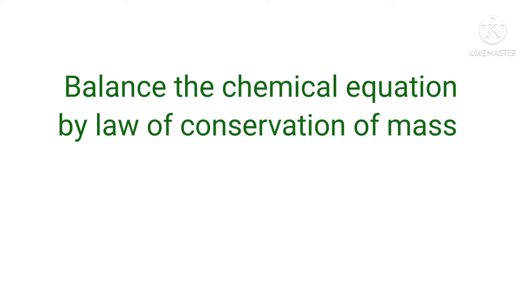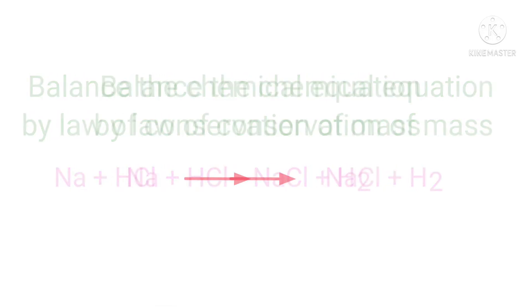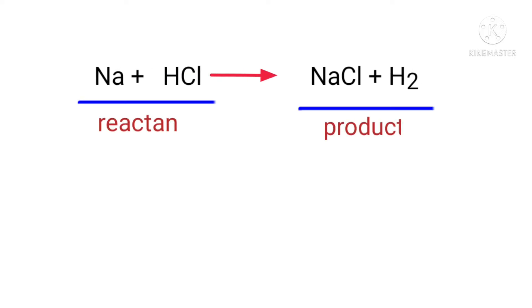Balance the chemical equation by the law of conservation of mass. Sodium plus hydrogen chloride gives us sodium chloride plus hydrogen. In this equation, the reactants are sodium and hydrogen chloride, and the products are sodium chloride and hydrogen.